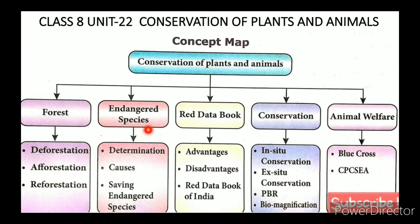The key topics covered are: Reforestation (3rd), Endangered Species (4th), Red Data Book (5th), Conservation (6th), People's Biodiversity Register or PBR (7th), Biomagnification (8th), Animal Welfare (9th), and the 6th topic is Conservation, specifically In-Situ Conservation.